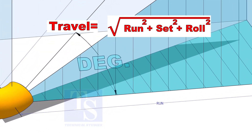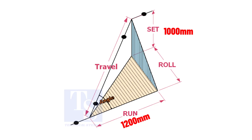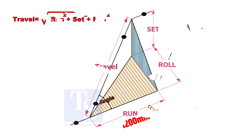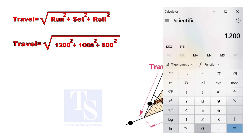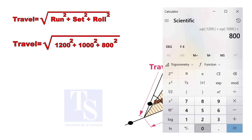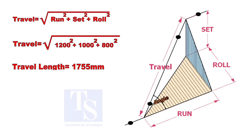The formula to calculate the travel length is the root of the sum of the run, set and roll. Assume that the run is 1200 mm, set is 1000 mm and the roll is 800 mm. Let us calculate. The travel length is 1755 mm.